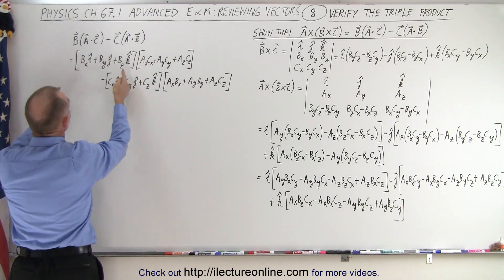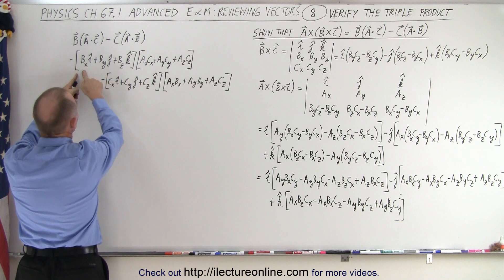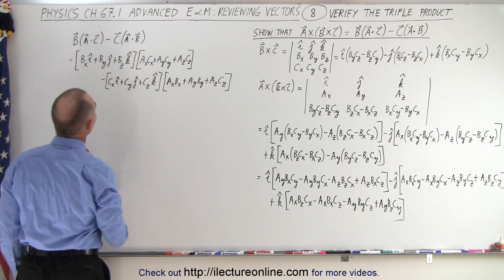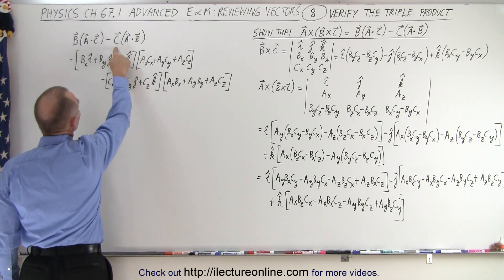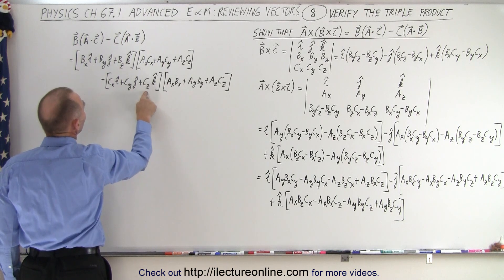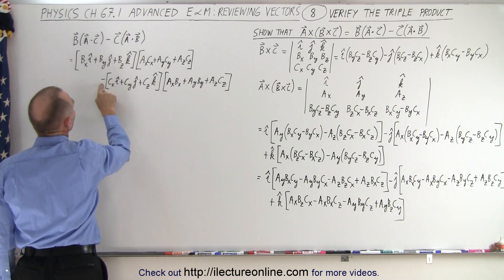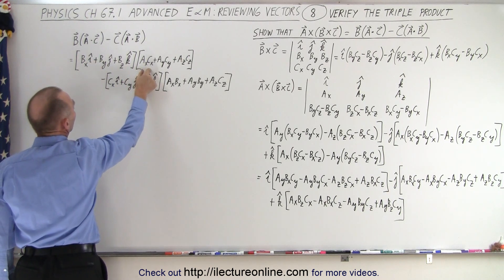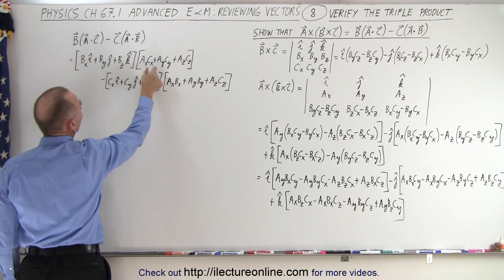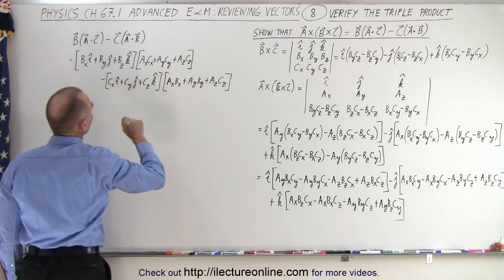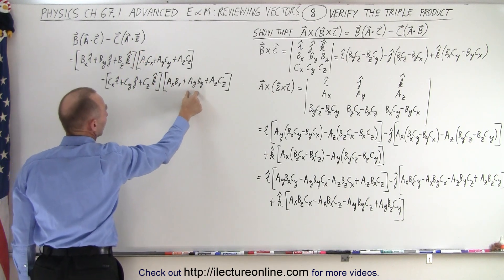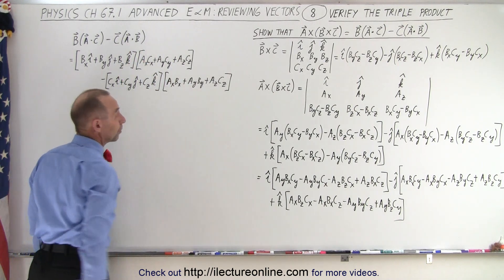B is simply the vector with components BX, BY, BZ in the I, J, K directions. C is simply CX, CY, CZ in the I, J, K directions. A dot C is the X, Y, and Z components multiplied together and summed, and A dot B is likewise the X, Y, and Z components multiplied together and summed.